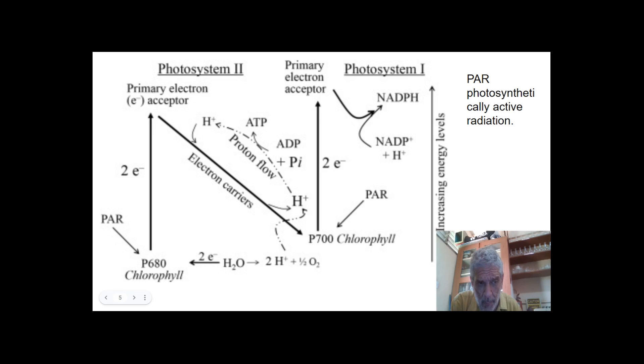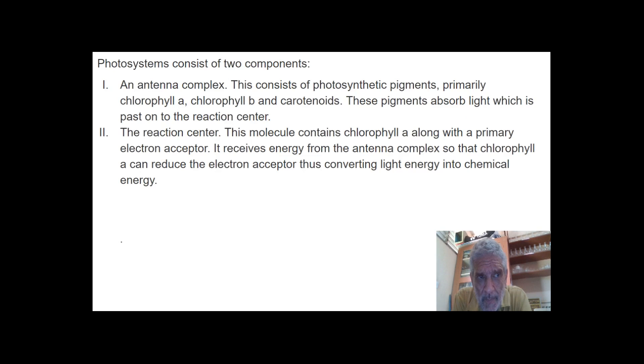So if we go back to this, we can notice we have two photosystems. This is photosystem II and this is photosystem I. And what is a photosystem? It's an antenna complex. This consists of photosynthetic pigments, primarily chlorophyll A, chlorophyll B and carotenoids. These pigments absorb light which is passed on to the reaction centre.